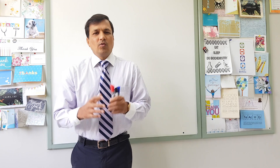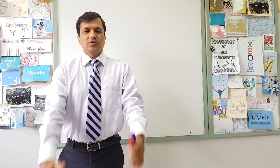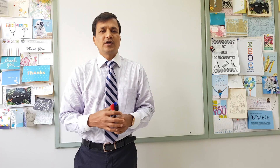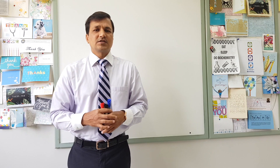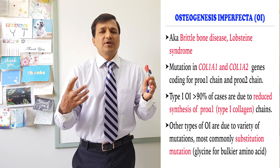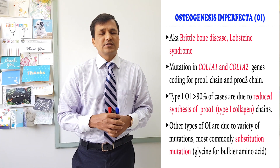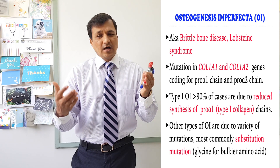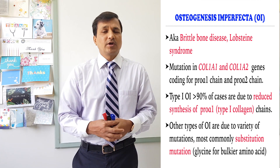Osteogenesis imperfecta is also called brittle bone disease, and is also referred to as Lockstein syndrome. There are several mutations that cause osteogenesis imperfecta, depending on the type. But in all types, the common feature is that the type 1 collagen molecule has been mutated — specifically the genes coding for procollagen 1A1 and procollagen 1A2, which code for collagen 1 alpha 1 and alpha 2 chains present in the type 1 collagen molecule.